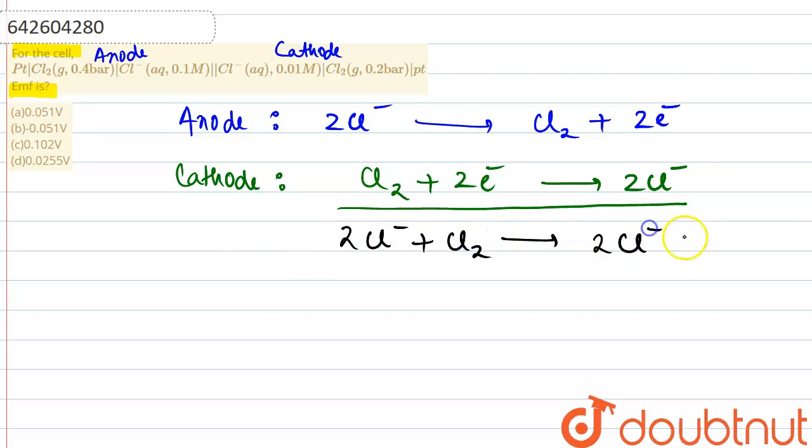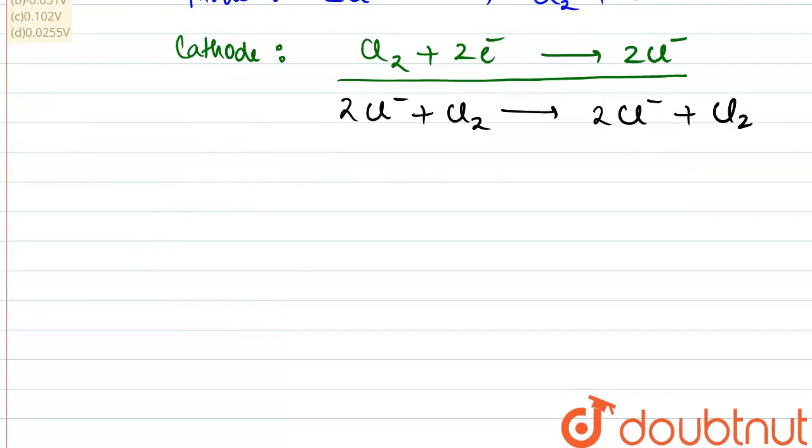Now the concentration condition is given for both the chloride ions here. If we pay attention, so we don't have to get confused here. Now we will be applying the Nernst equation directly.